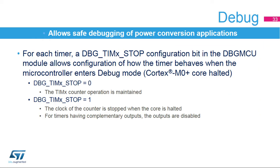The timer's state in debug mode can be configured with one configuration bit per timer. If the debug bit is reset, the timer clock is maintained during a breakpoint. If the debug bit is set, the timer's counter is stopped as soon as the core is halted. Additionally, the outputs of timers having complementary outputs are disabled and forced to an inactive state. This feature is extremely useful for applications where the timers are controlling power switches or electrical motors, preventing power stages from being damaged by excessive current or motors being left in an uncontrolled state when hitting a breakpoint.